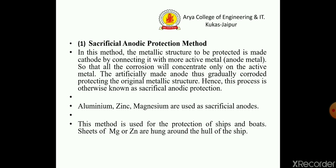Sacrificial anodic protection method: in this method, the metallic structure to be protected is made the cathode by connecting it with a more active metal such as an anodic metal, so that all corrosion will concentrate only on the active metal. The artificially made anode gradually corrodes, protecting the original metallic structure. This process is known as sacrificial anodic protection. For example, aluminum, zinc, and magnesium are used as sacrificial anodes.